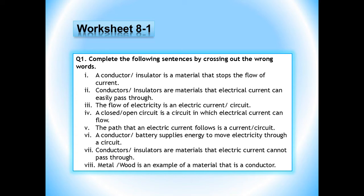Number 3 is: the flow of electricity is an electric current or circuit. Number 4 is: a closed or open circuit is a circuit in which electrical current can flow — open is the wrong word, so you will cross out open. Number 5 is: the path that an electric current follows is a current or circuit — the wrong word in this sentence is current, so cross it out.